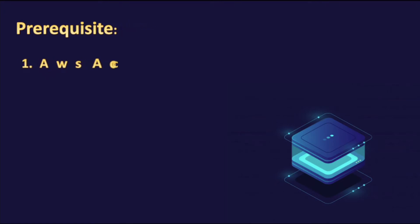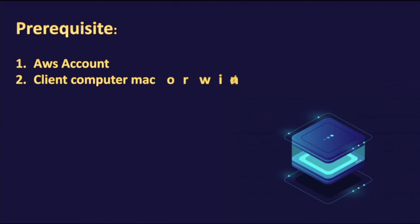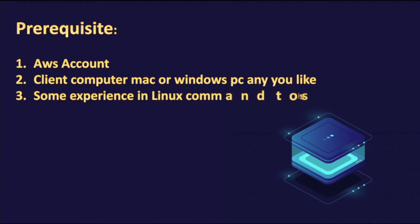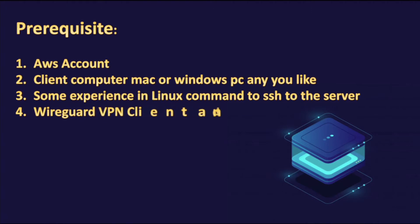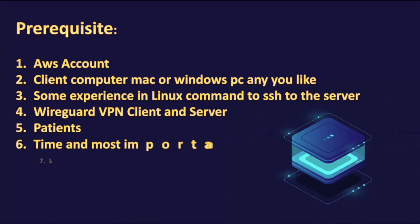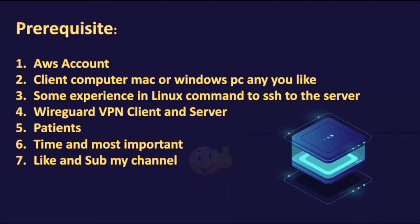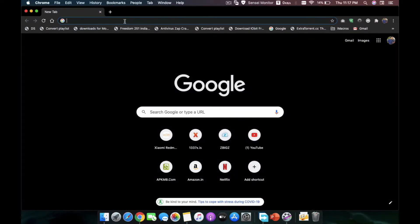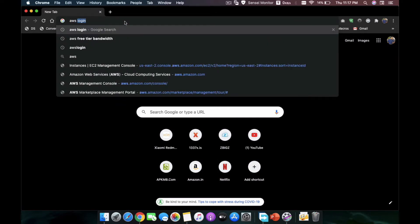Prerequisites: one, an AWS account; two, a client computer — Mac or Windows PC; three, some experience with Linux command to SSH to the server; four, WireGuard VPN client and server; five, patience; six, time — and most importantly, like and subscribe to my channel. The first step is to launch your browser and go to the AWS login site.